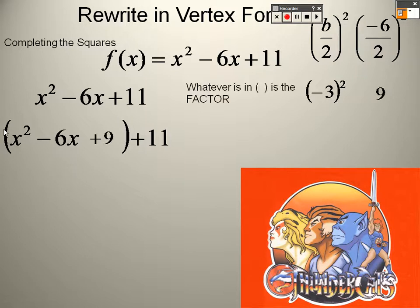Now remember, whatever number is on the outside, you have to multiply that through, except there's a 1 there. So 1 times 9 is 9. So whatever I add, I have to also subtract. So I'm going to take 9 away. So 11 minus 9 is 2.